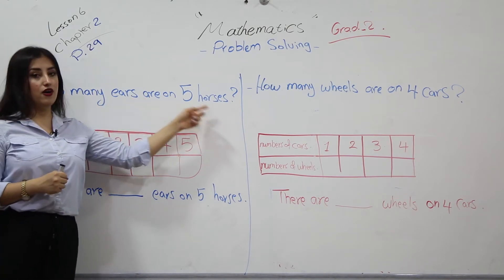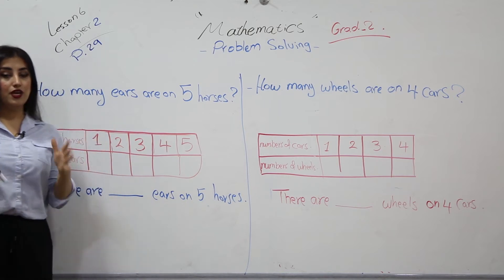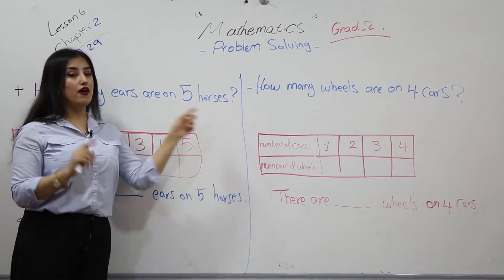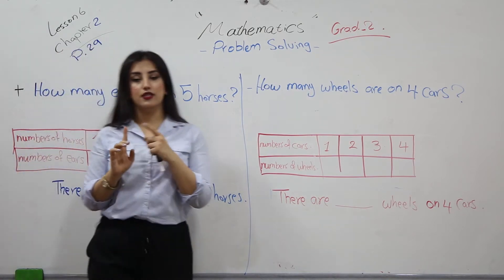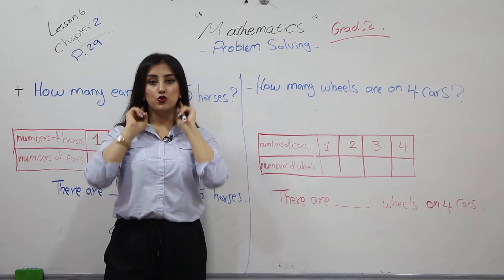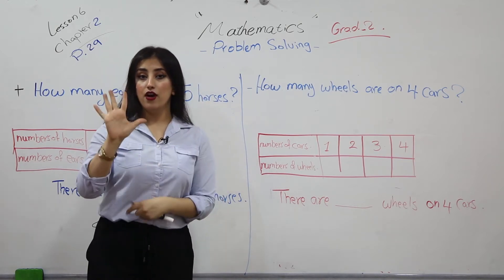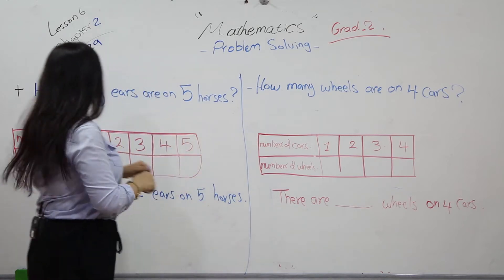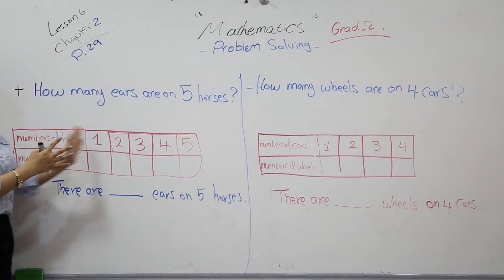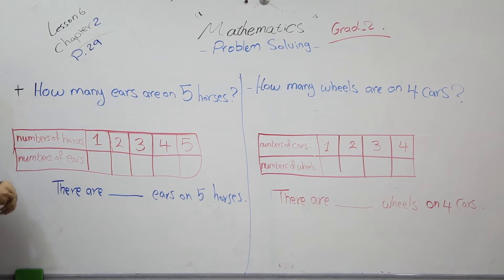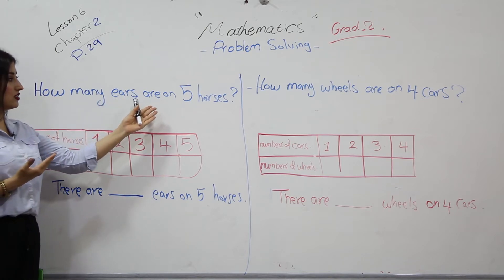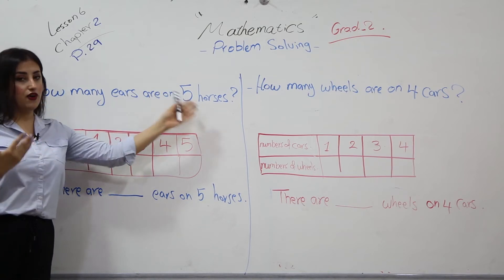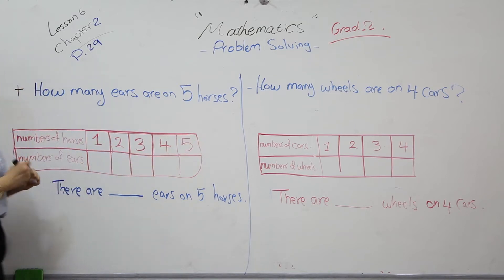Here we have an example: how many ears are on five horses? If you have five horses — one horse has two ears — what about five horses? We make a table of information and think about a plan.